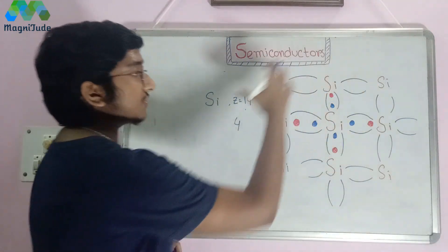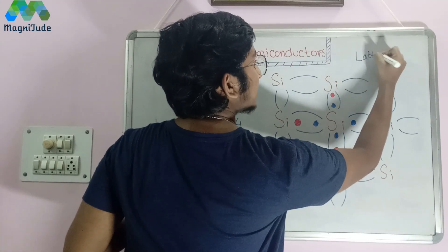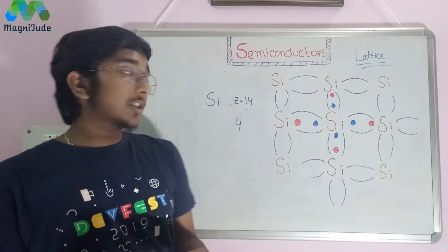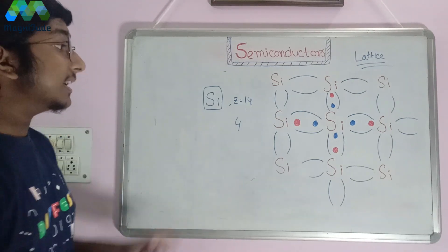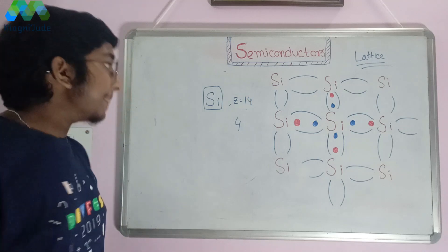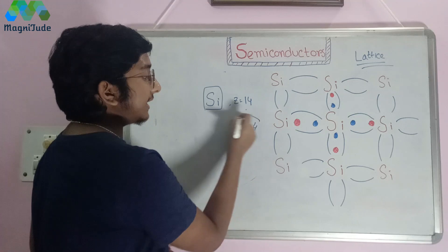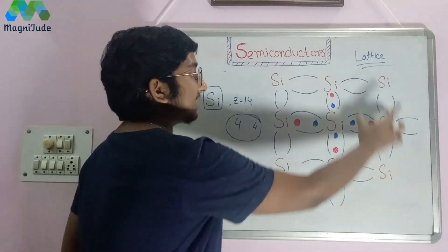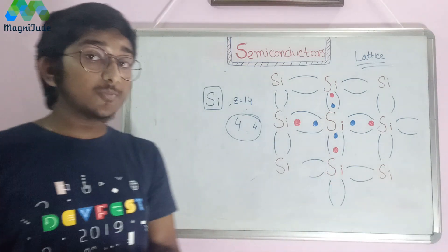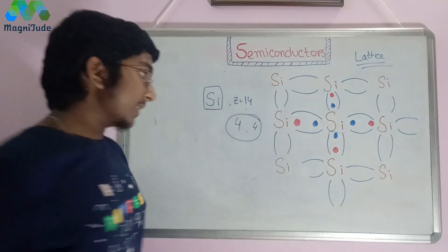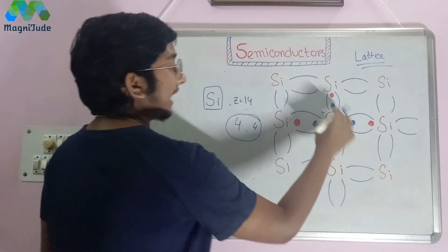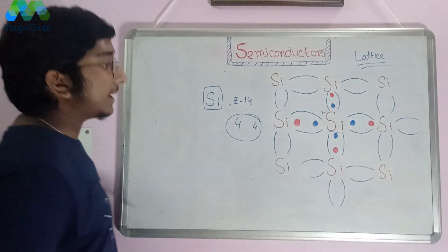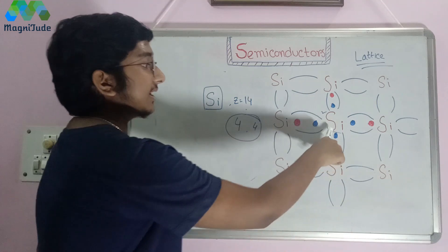I have drawn what is known as a lattice — spelled L-A-T-T-I-C-E — this is the lattice of silicon. This is not an isolated atom. When we talk about an isolated atom, we mean only a single silicon atom is present. But here, multiple silicon atoms are present. Silicon needs four more electrons to complete its shell, so silicon atoms form bonds with the adjacent silicon atoms around them.